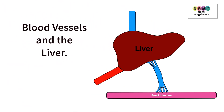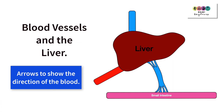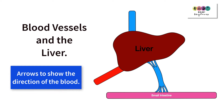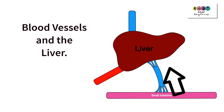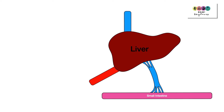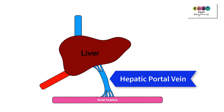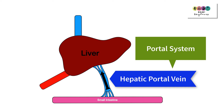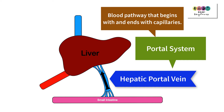This is a really important diagram showing the blood flow — the blood vessels leading into and out of the liver. You could be either given this on your exam paper or asked to draw and label it yourself. It's really important that when drawing blood vessels, you always put in arrows to show the direction of blood. We start with the small intestine, where digestion has been completed and digested food particles pass into the bloodstream via the hepatic portal vein. This is a portal system — a blood pathway that begins with capillaries and ends with capillaries — and it transports digested food particles to the liver for processing.